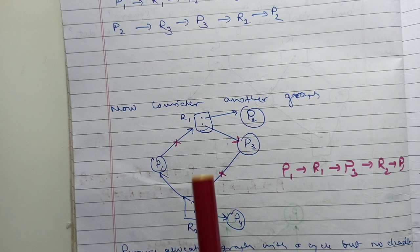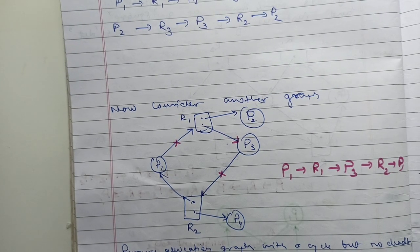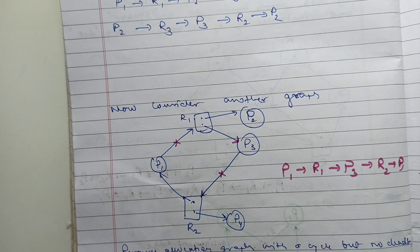That is the resource allocation graph with a cycle but no deadlock in the multiple-instance case. To summarize, deadlock can be characterized in two ways: first, if all four necessary conditions hold simultaneously; second, using a resource allocation graph — if it contains a cycle and resources have single instances, deadlock definitely occurs. In the next video we will discuss methods for handling deadlock. Please like, subscribe, and share this video.